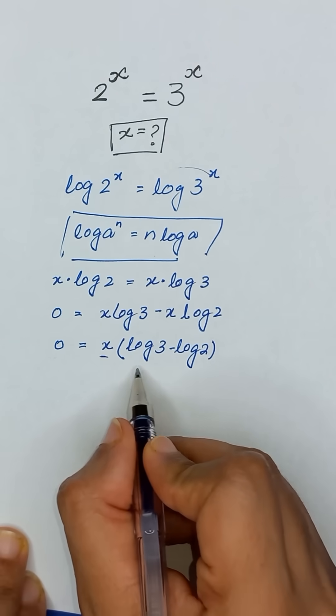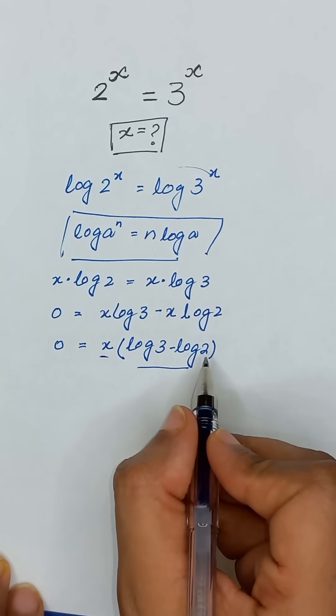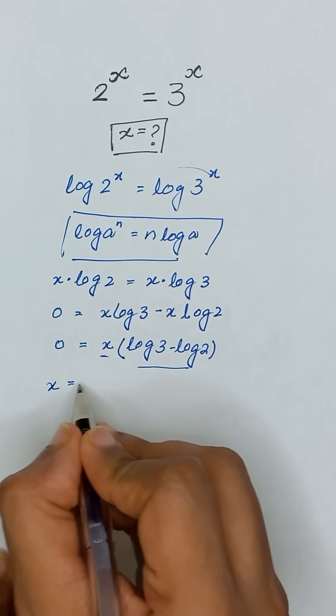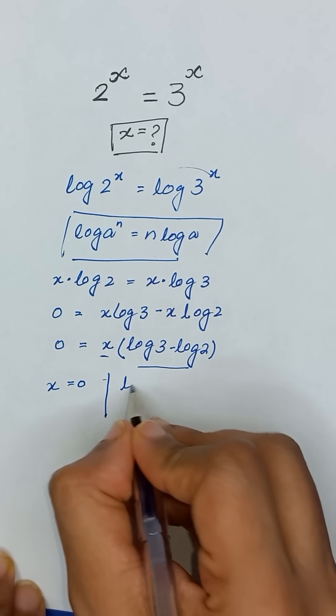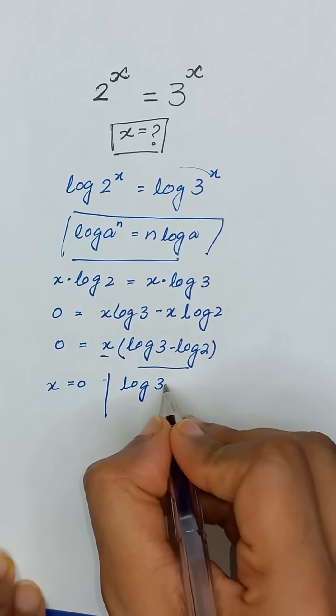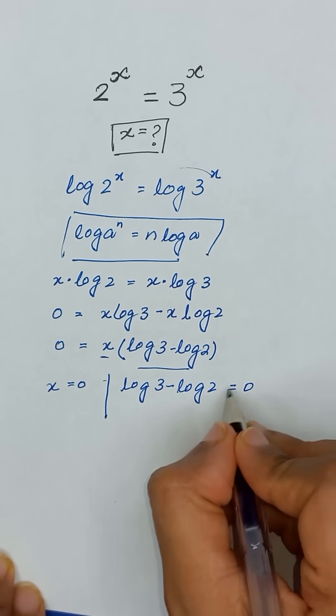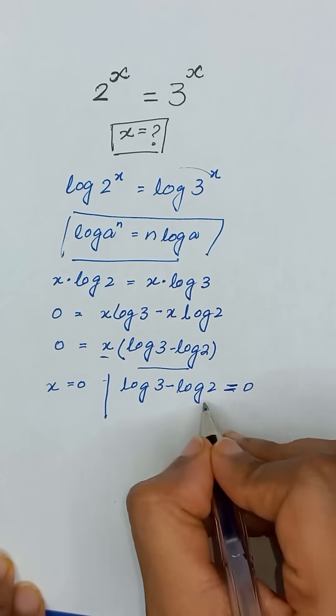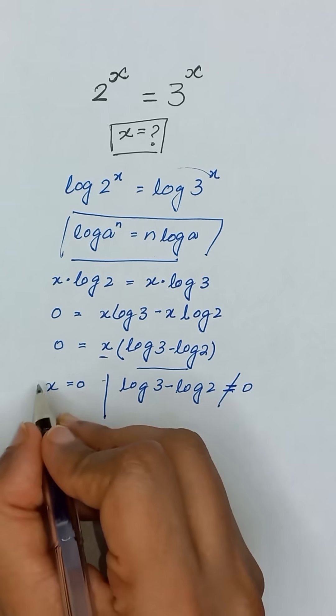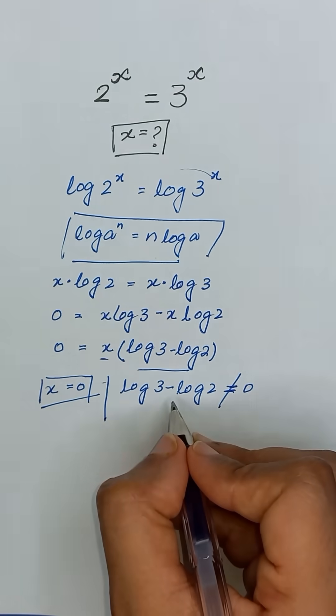Here we have two factors x and log of 3 minus log of 2. It's mean x will be equal to 0 or log of 3 minus log of 2 is equal to 0. But this log of 3 minus log of 2 cannot be equal to 0. It's mean the value of x is equal to 0. So thanks for watching.